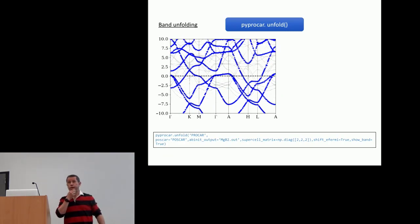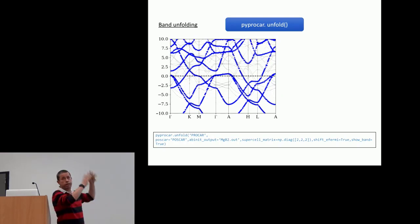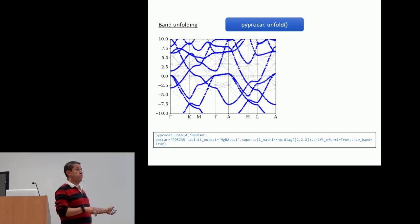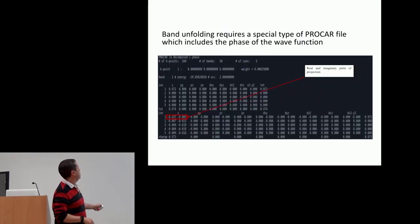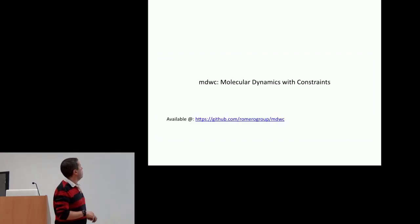We can also do band folding. You do the supercell calculation, and then you read the corresponding PROCAR from that calculation. You set the supercell that you have created, and the code will do the band folding. For this case, the PROCAR will have an additional block that corresponds to the imaginary and real part of the projections, which are necessary for the band folding.